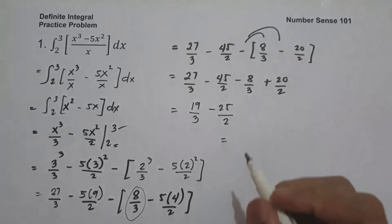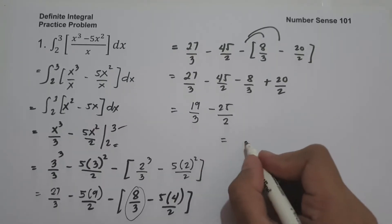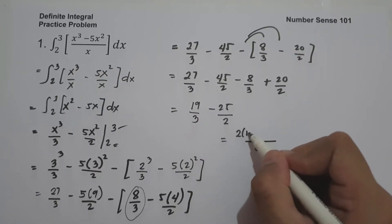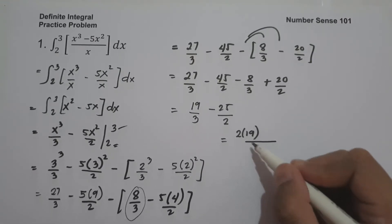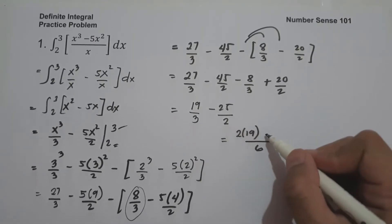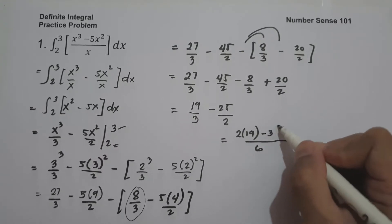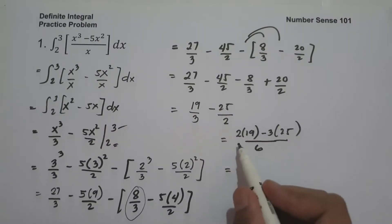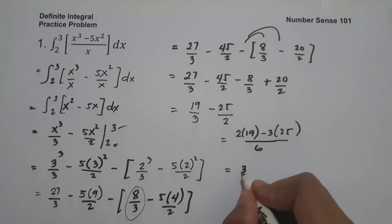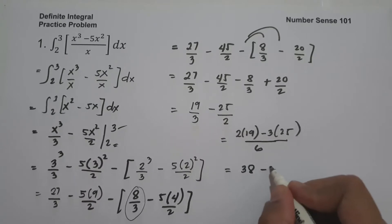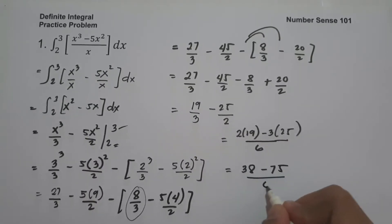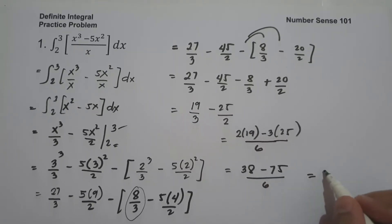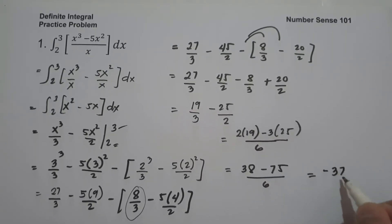The LCM of 3 and 2 is 6. Combining 27 over 3 minus 8 over 3 gives 19 over 3. Then 6 divided by 3 is 2, multiplied by 19 gives 38. And 6 divided by 2 is 3, multiplied by 25 gives 75. So we have 38 minus 75 over 6, which is negative 37 over 6. This will be our answer.